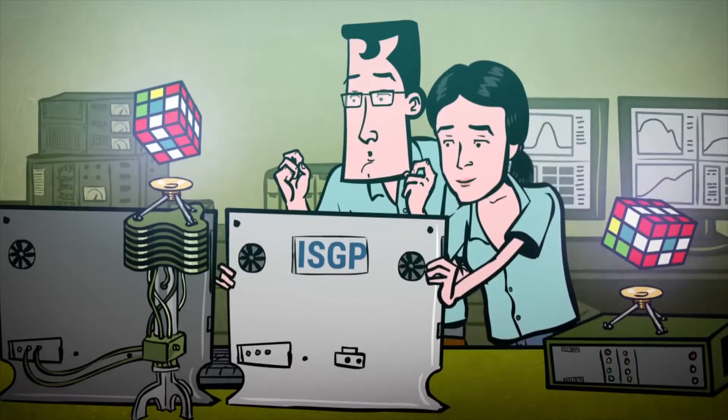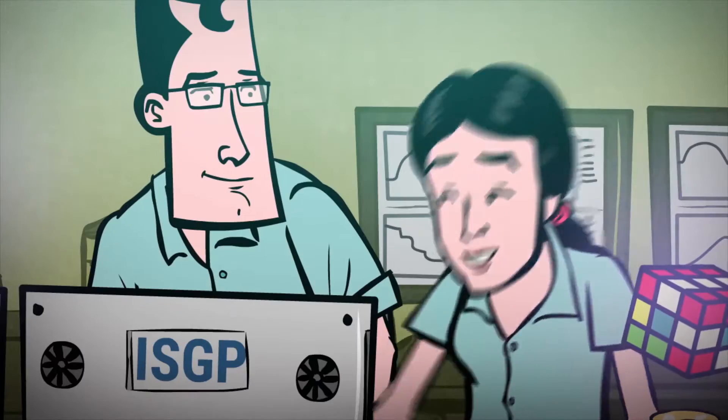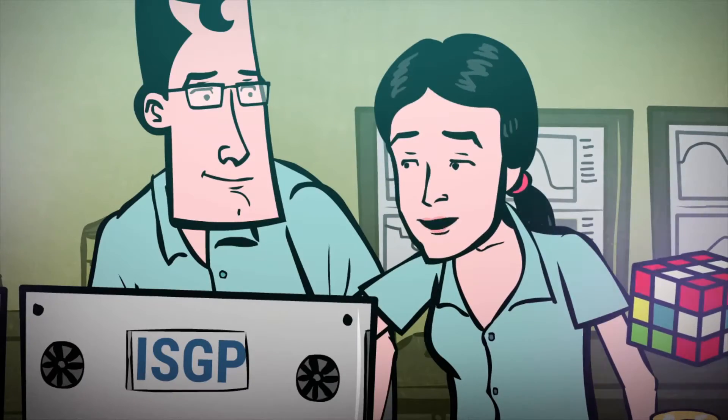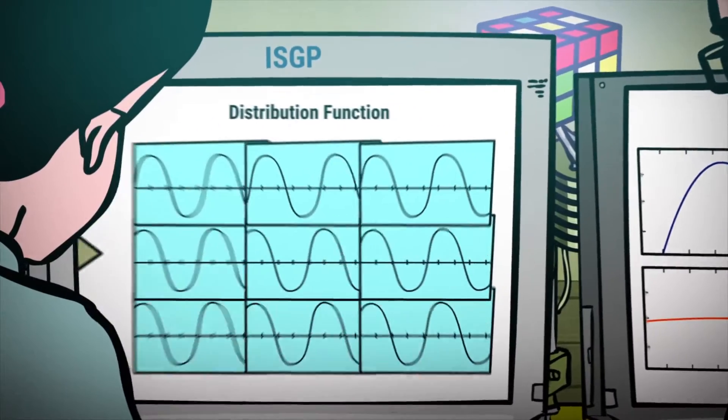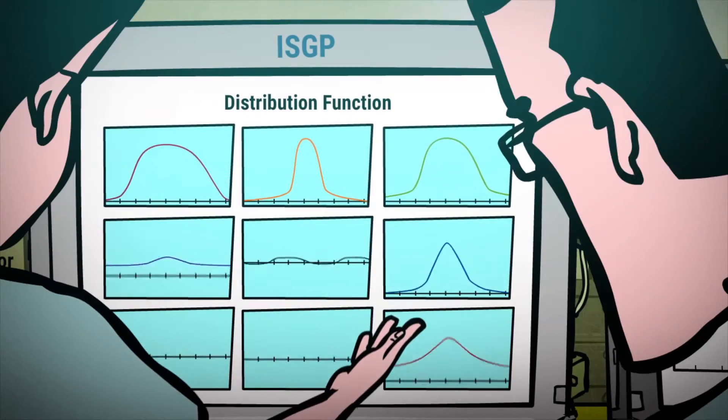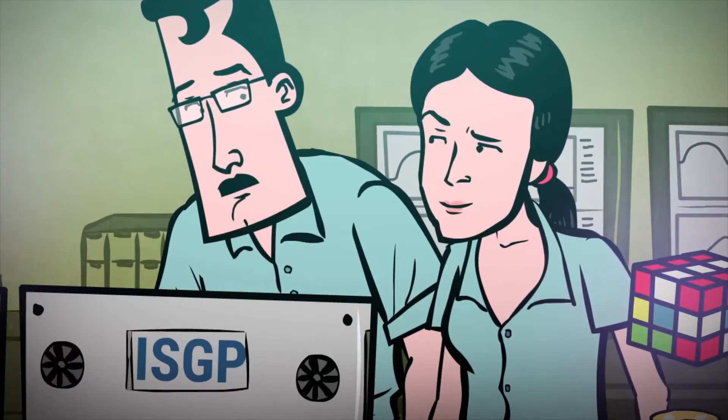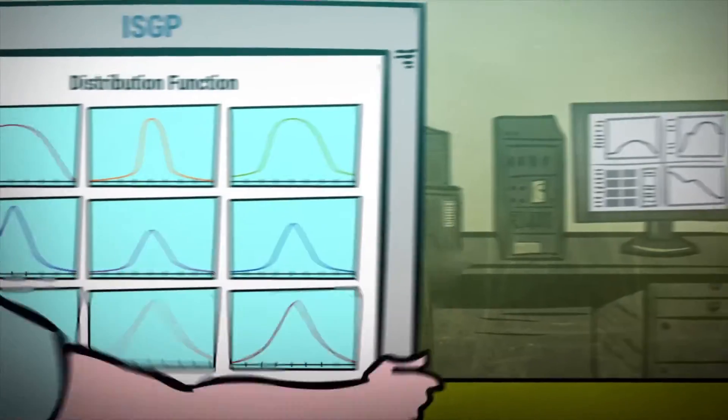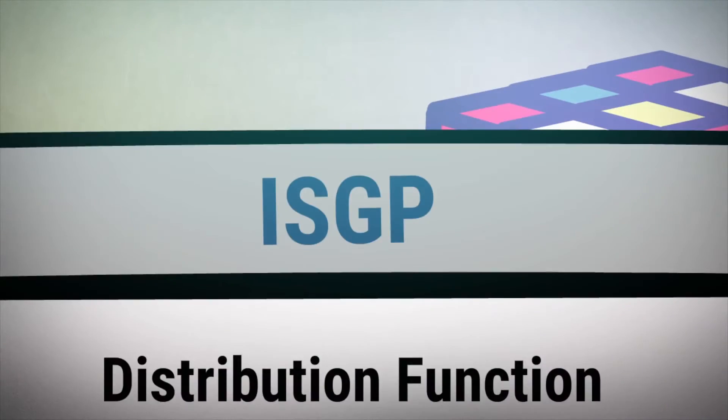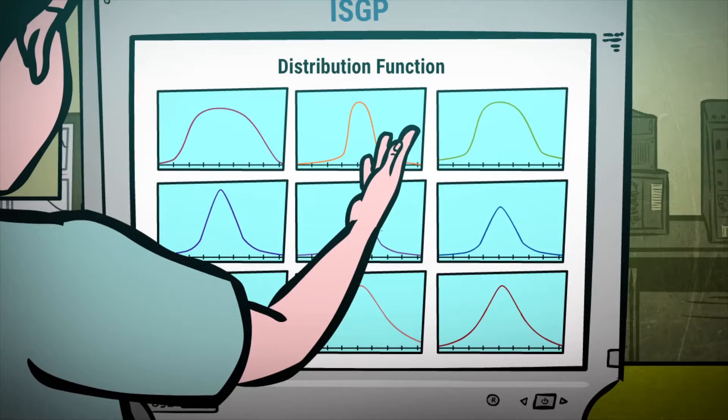Along comes Yoed Sirs Group and asks, what if we take this approach and just assume the distribution function is made of peaks? So instead of finding a point-by-point function, the software they developed, ISGP, is choosing from a pool of peak functions.